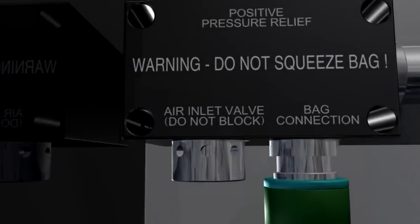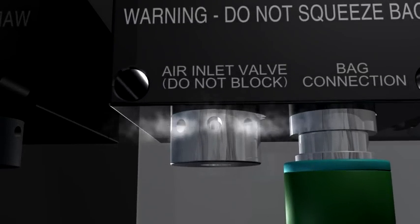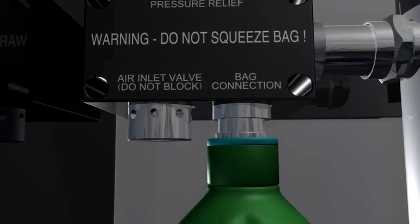Third, the air inlet valve allows room air to be drawn in whenever the supply of oxygen is less than the demand as expressed by the patient's minute volume. We'll come back to this shortly.